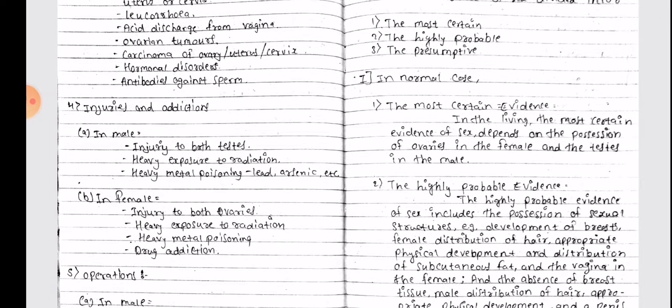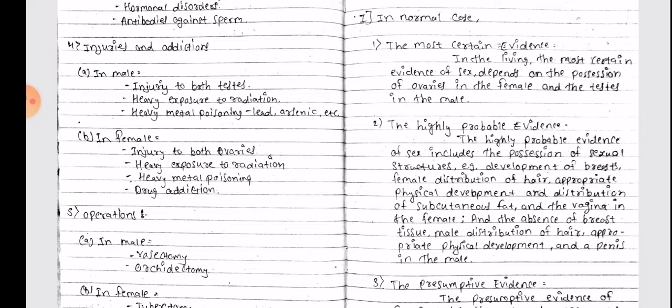Injuries and addictions: In male - injury to both testes, heavy exposure to radiation, heavy metal poisoning, lead, arsenic, etc. In female - injury to both ovaries, heavy exposure to radiation, heavy metal poisoning, drug addiction.